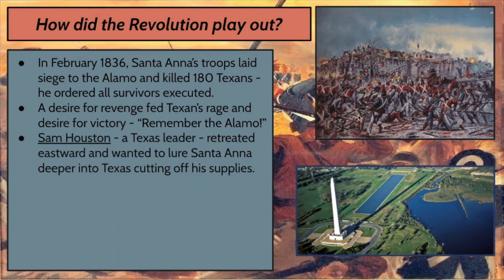Sam Houston — there's a city named after him — was a Texas military leader. He retreated eastward from San Antonio. His desire was to lure Santa Ana and his troops deeper into Texas, making it harder to resupply from Mexico. That turned out to be a very good strategy.